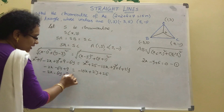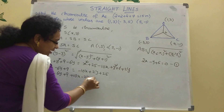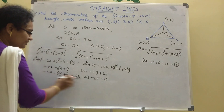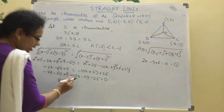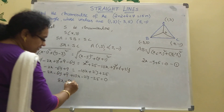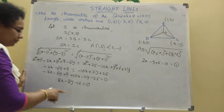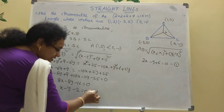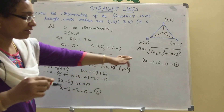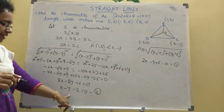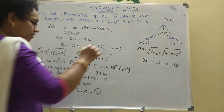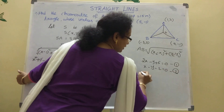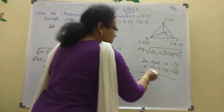Bringing all terms to one side: -2x - 6y + 9 + 10x - 2y - 25 = 0, giving 8x - 8y - 16 = 0. Dividing by 8, the second equation is: x - y - 2 = 0.